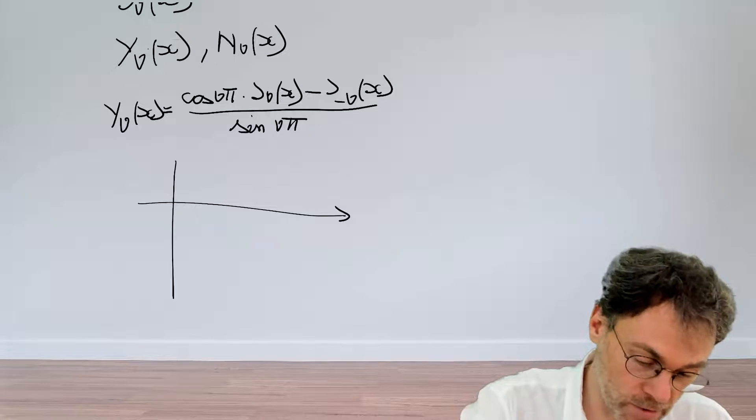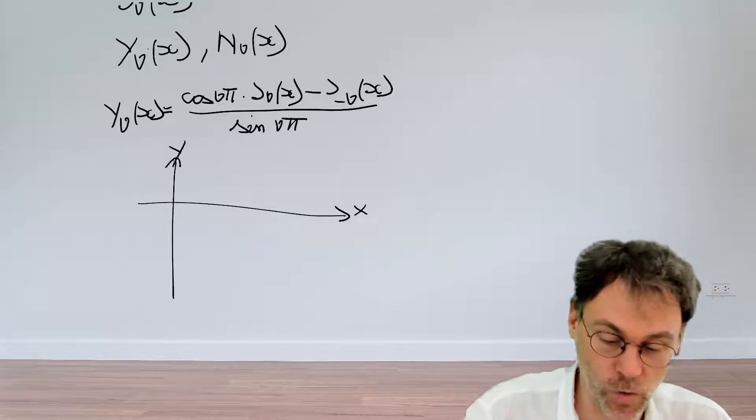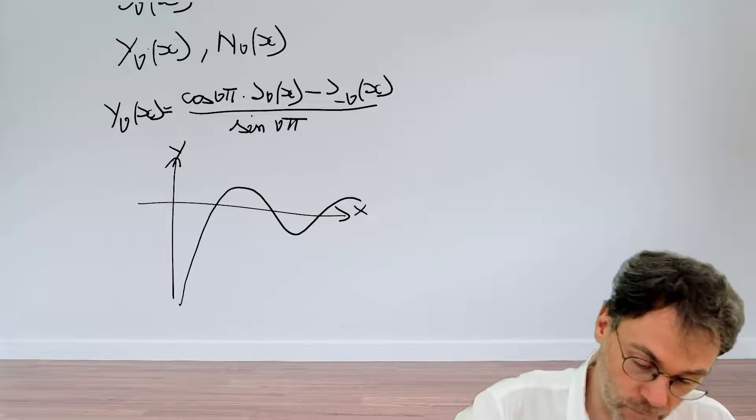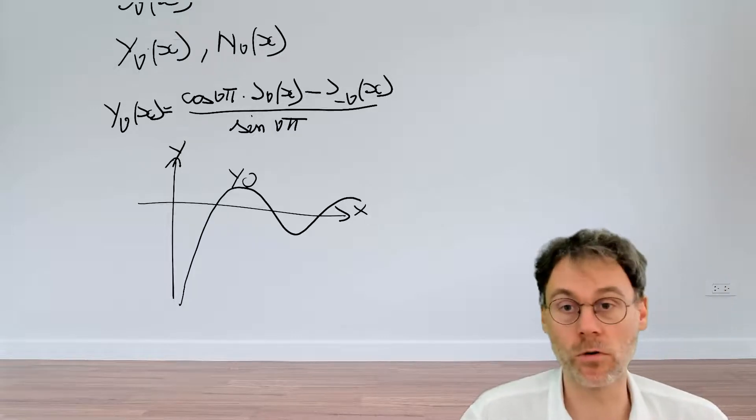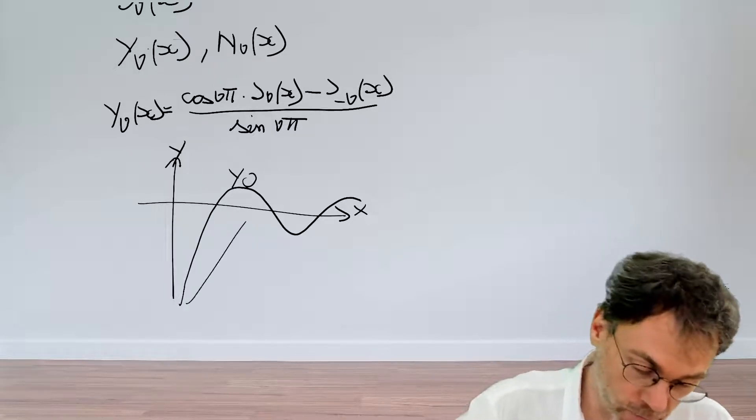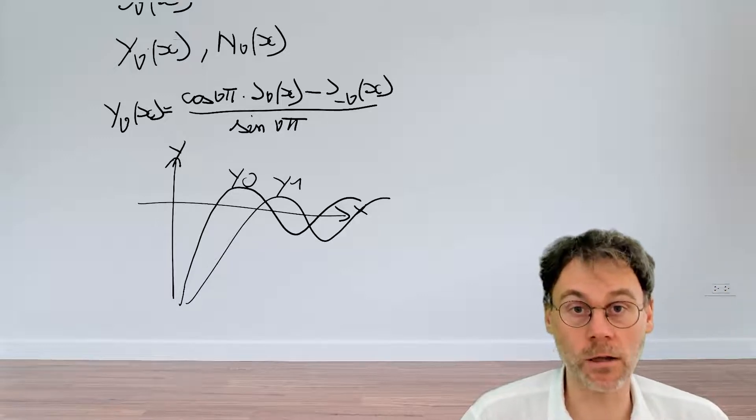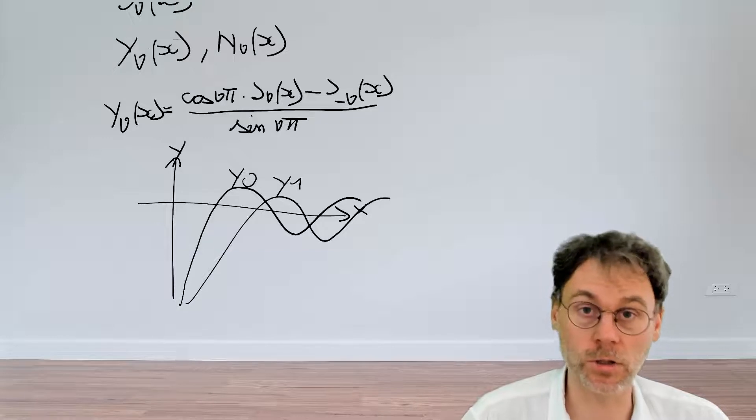So if we do that, so this is X and this is Y, then the zeroth order function, Y_0 looks something like this, and then the first order looks something like this, and so on and so forth. So again, oscillating functions but not periodic.